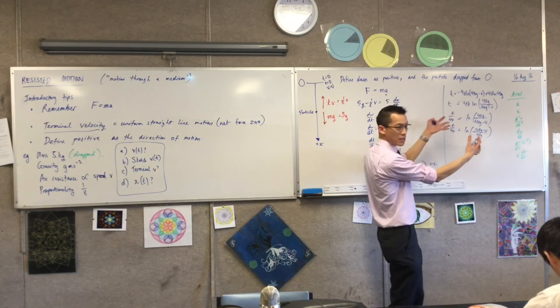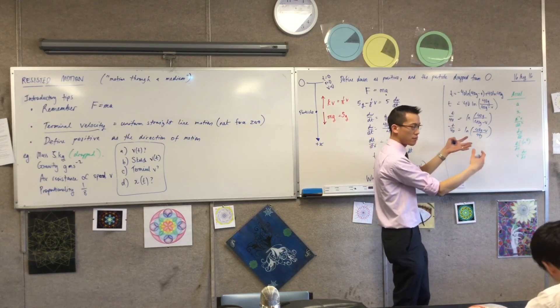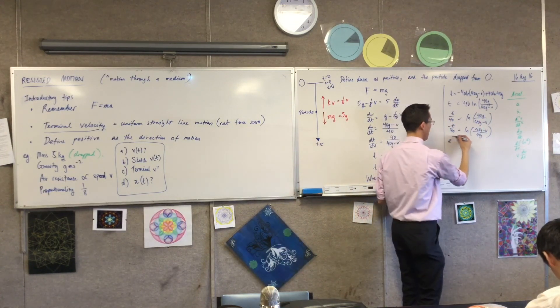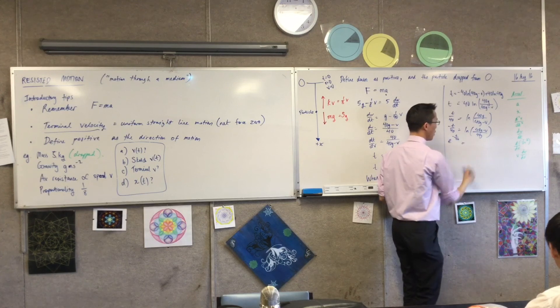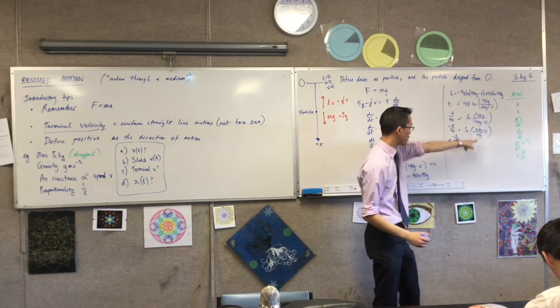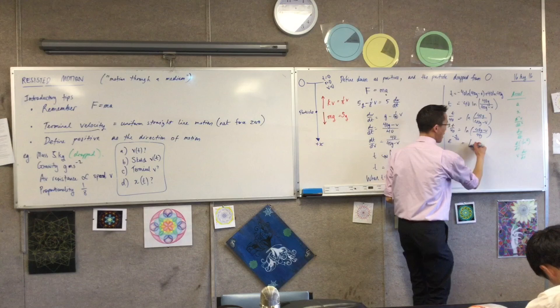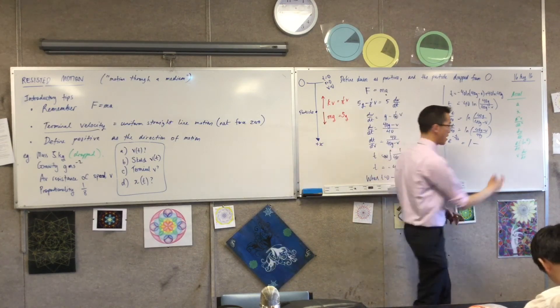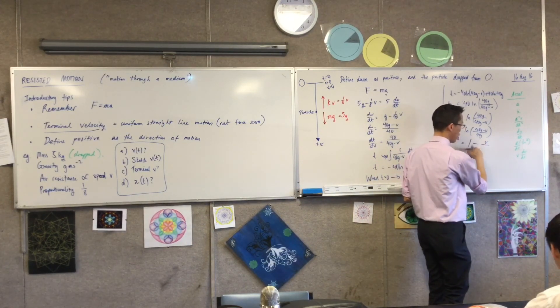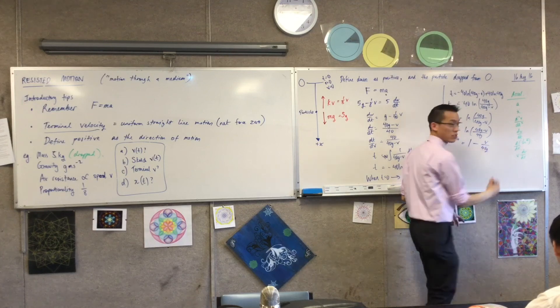I'm going to raise both sides to the power of e to the power of that, like this. What happens to the right-hand side? It's just that, right? I'm going to simplify that in one here. That's 40g minus, sorry, 40g on 40g minus me on 40g.